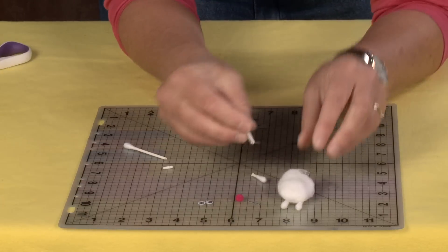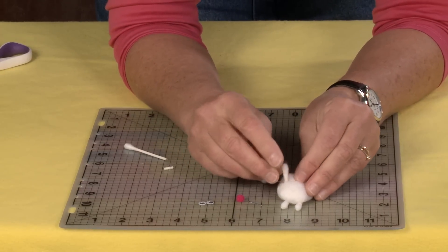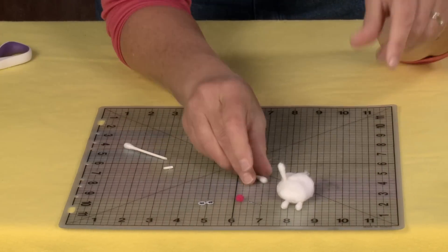Put a little hot glue at the bottom and kind of push it right in there to make the ears.